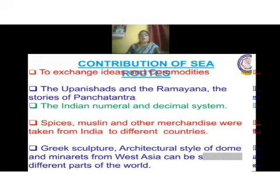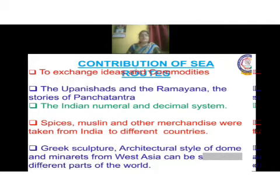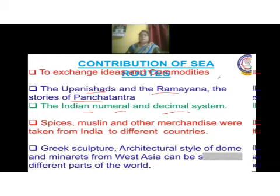We are going to see how various commodities, culture, and ideas were shared with other countries through land routes and sea routes. To exchange ideas, land routes were mostly used first. The Upanishads, the Ramayana, stories of Indian numerals and decimals — all were shared from India to other countries through travelers or traders, mostly by land routes.